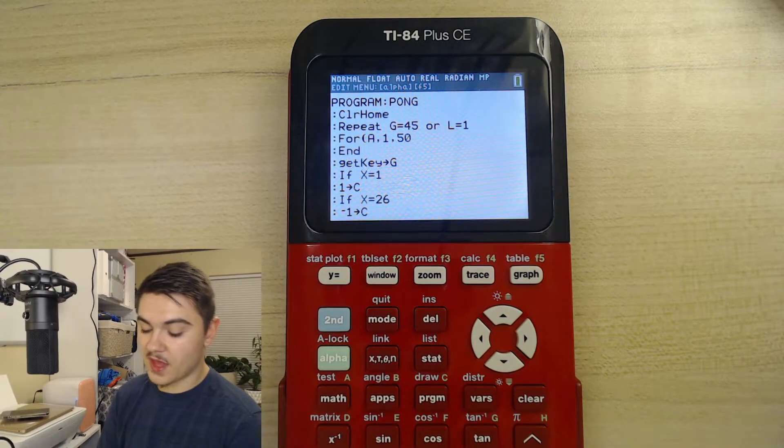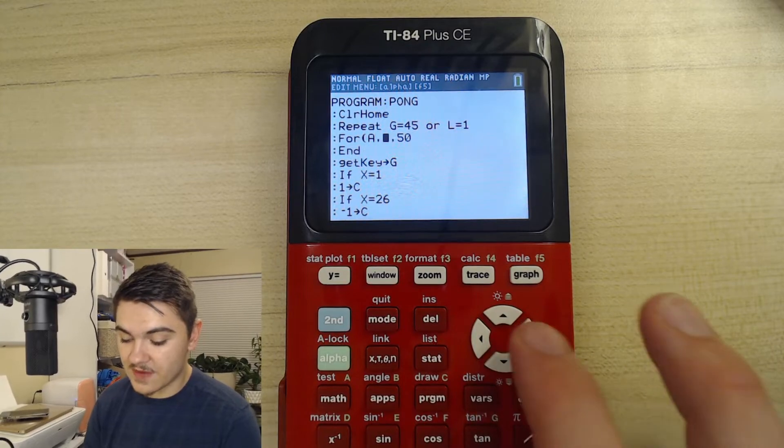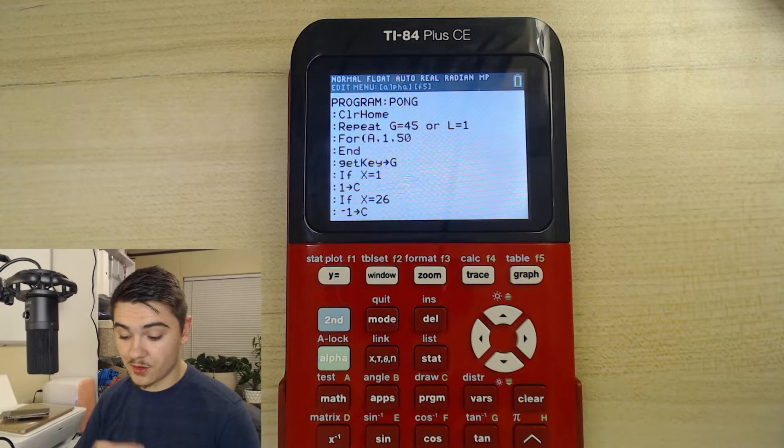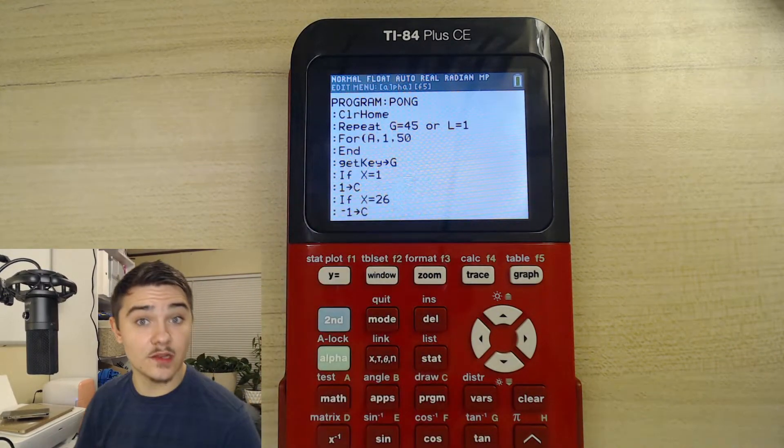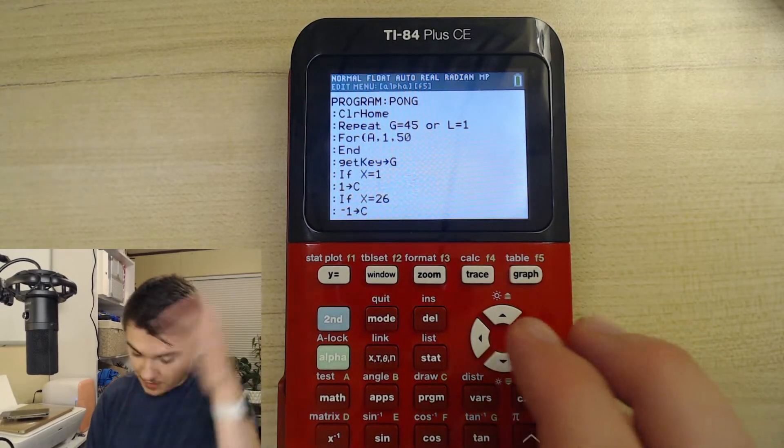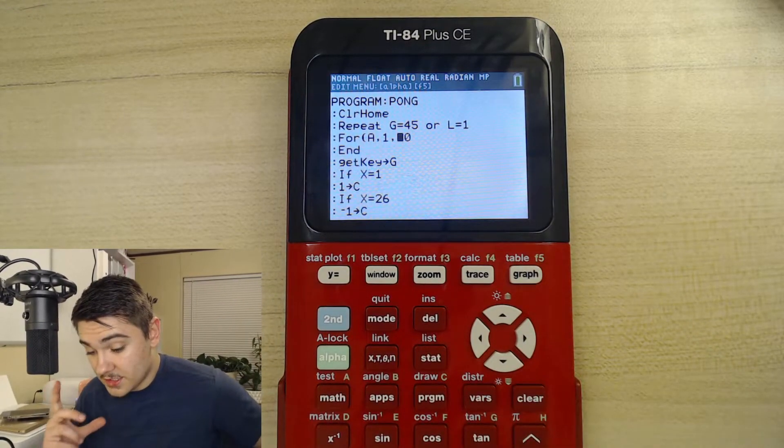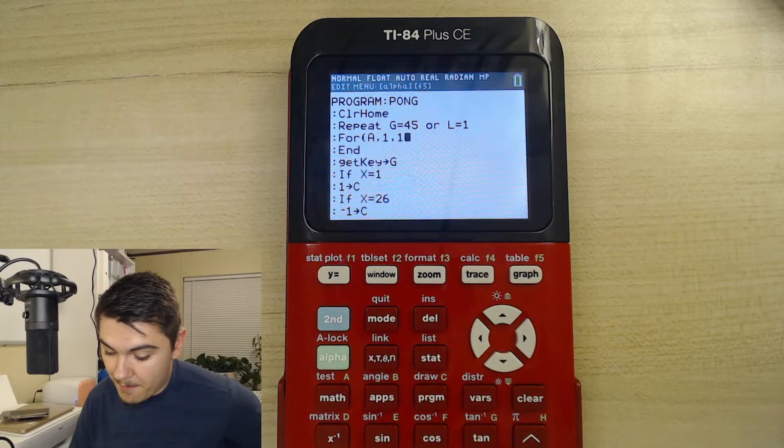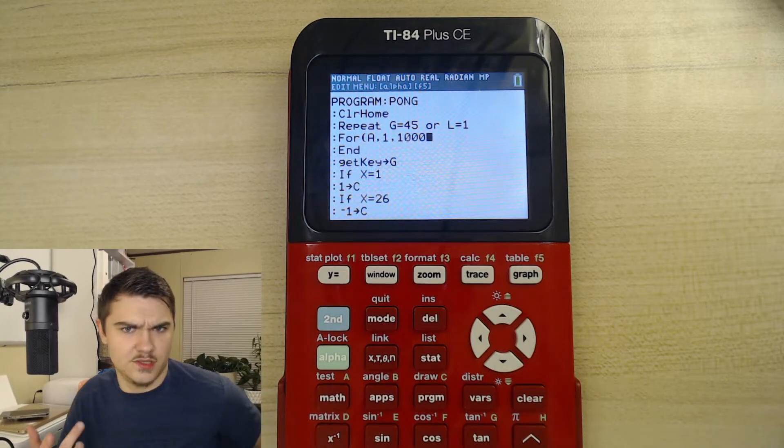So this is a for loop. And what you're going to do is if the program is still not slow enough after you run it, you're going to make this 50 even larger. So the larger the number, the slower the program. So if I make mine 1000, which is just crazy.